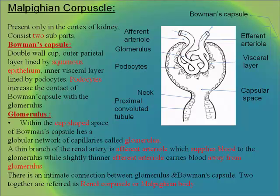The Malpighian corpuscle is present only in the cortex. The Bowman's capsule is a double-walled cup: the outer parietal layer is lined by squamous epithelium, and the inner visceral layer is lined by porocytes, which increase the contact of the Bowman's capsule with the glomerulus. Within the cup lies the glomerulus, a globular network of capillaries. The afferent arteriole supplies blood to the glomerulus, while the slightly thinner efferent arteriole carries blood away. Together they are referred to as the renal corpuscle or Malpighian body.